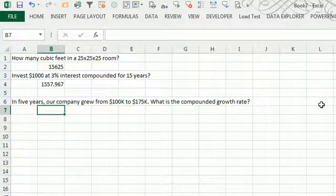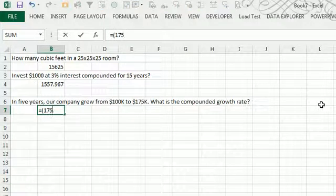How about in 5 years our company grew from 100,000 to 175,000. So equal 175 divided by 100 raised to the 1 divided by 4.